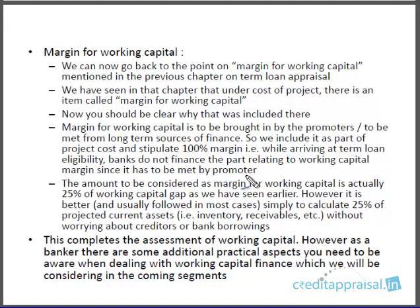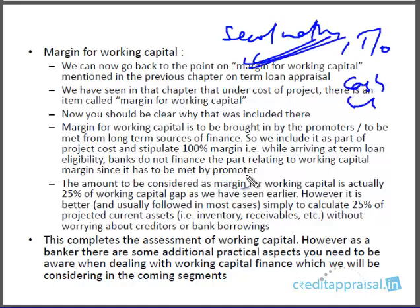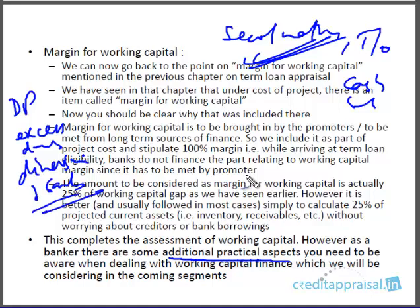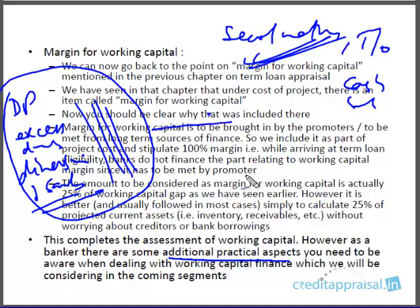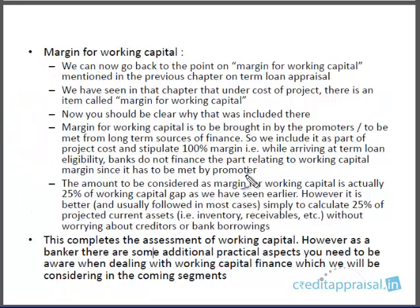With this we come to the end of this segment on assessment of working capital. We have seen five methods of working capital assessment. The most popular is the second method of lending. You should also be aware of the turnover method and the cash budget method. In the coming segments we will be discussing additional practical points: drawing power, excess draws, and diversion of funds — where companies divert funds sanctioned for working capital to long-term uses.